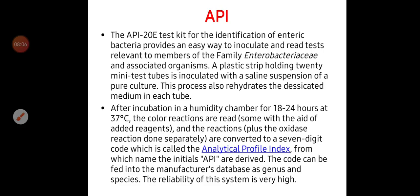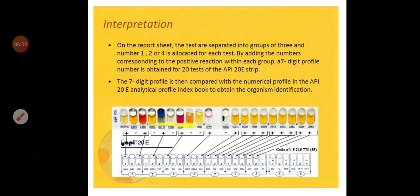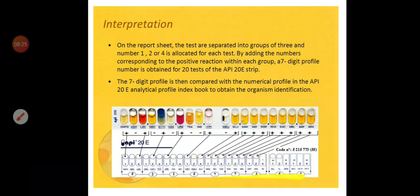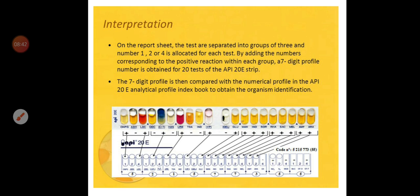API 20E is a plastic strip that contains 20 mini-kits used to differentiate between members of Enterobacteriaceae, producing a seven-digit profile. For each set of three mini-kits, one digit of the profile is produced by adding the scores. For example, if the first test is positive it takes one point, if the second is positive it takes four points, and if the third is positive it takes two points — but if negative, no point is added.